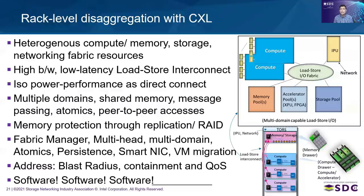We need to nurture the synergy between networking fabrics and load store interconnect so that we can interoperate seamlessly, providing the same look and feel for end users but with different performance characteristics. If you go through the fabric, latencies will be a lot higher; through the load store interconnect, latencies will be a lot lower but scale will also be lower. We already have the necessary constructs like fabric manager, multi-head, multi-domain, atomic support, persistence flows, optimized flows to access system memory without involving the host, and VM migration with CXL.